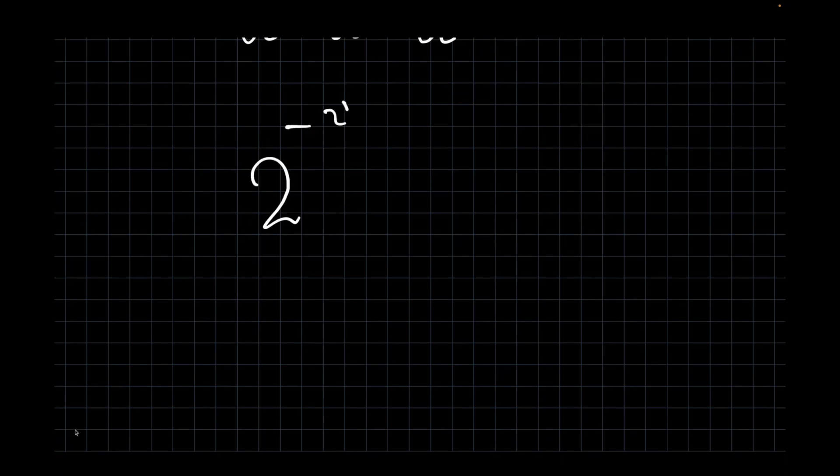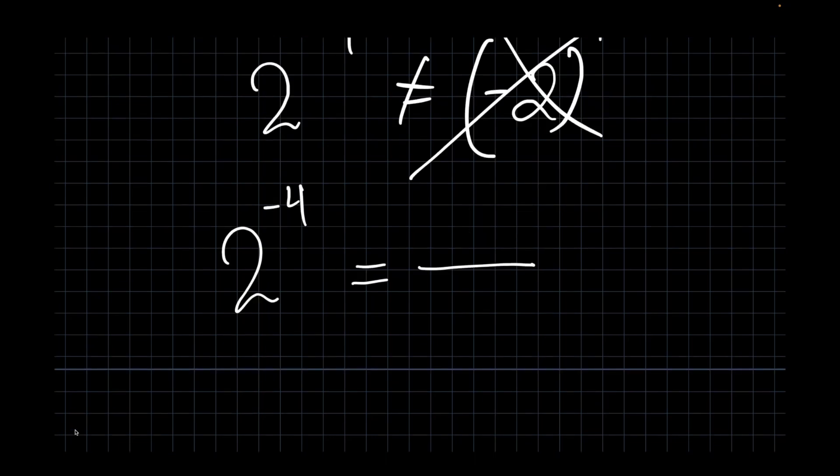But what is 2 to the negative 4th power? That is not negative 2 to the 4th power. Cross the line, change the sign. Stick this into the dungeon and you get 1 over 2 to the 4th.